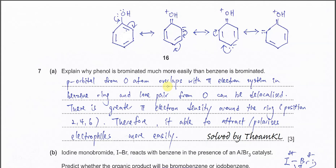Question 7a: Explain why phenol is brominated much more easily than benzene. It is because the oxygen in phenol has a p orbital and it can overlap with the pi electron system in the benzene ring. After its overlap, the lone pair on the oxygen can delocalize in the ring.